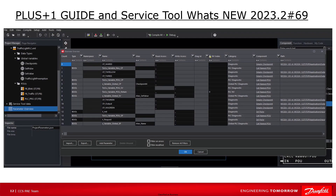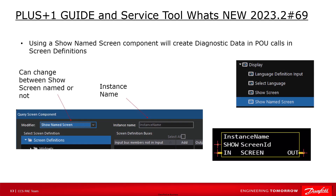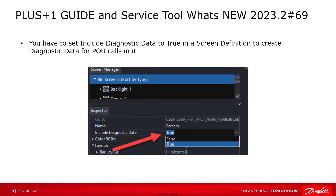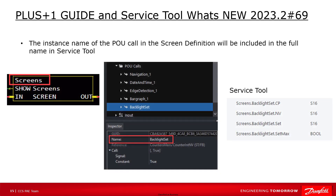All defined diagnostic and non-volatile parameters in CCPs and POUs will be present in the parameter overview. Since POU is used in screen definitions as well, a new component called show named screen is available, which creates diagnostic data in screen definitions. A new property called include diagnostic data needs to be set to true to create diagnostic data for POU calls in it. The instance name of the POU call in the screen definition will be included in the full name in the Service Tool.